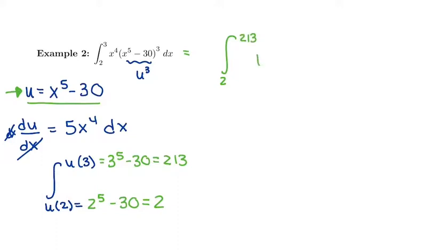We know that it's u cubed and now I just have to make sure I have a perfect du so I'm allowed to take the integral. So for a perfect du I would need a 5, an x to the 4th, and a dx. I have an x to the 4th and a dx but I'm missing a 5. So I have 1x to the 4th dx. What I have is 1/5th of my perfect du.